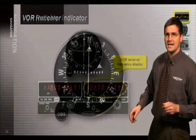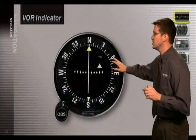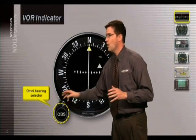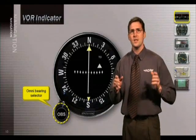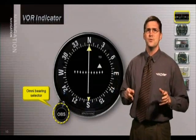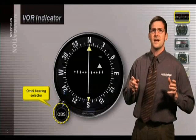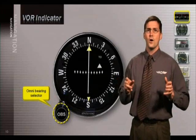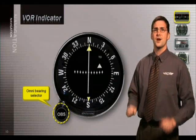Here's the VOR indicator that you will find in your airplane. This little knob is called the OBS, or the Omni Bearing Selector or Course Selector. The Omni Bearing Selector can move the entire face or dial of the instrument to any desired course or it can determine a radial from which the aircraft is flying.